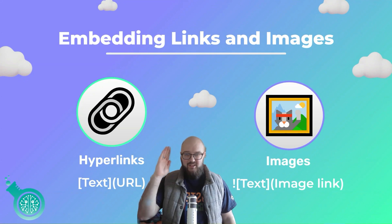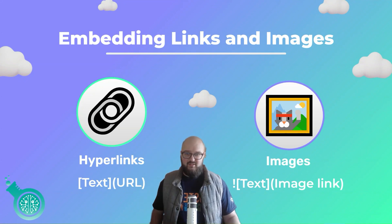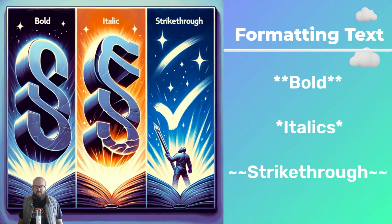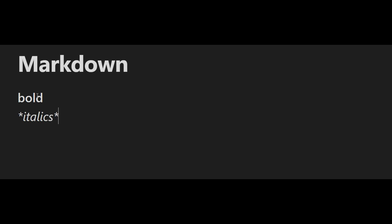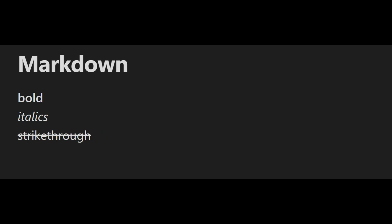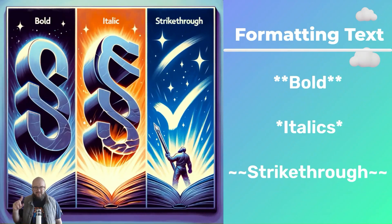For images it's pretty much the same format as a link but you put an exclamation mark first. Next we have bold, italics, and strikethrough. Bold is just two asterisks around the word you're trying to bold. Italics is just one asterisk around the word or words. Strikethrough is those squiggly tilde lines — just two of them on each side, top left of your keyboard.